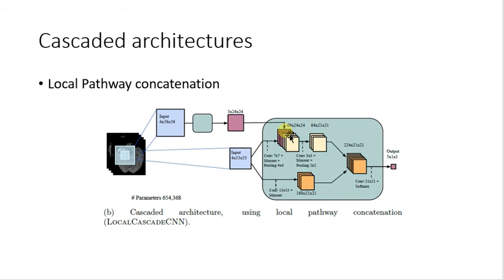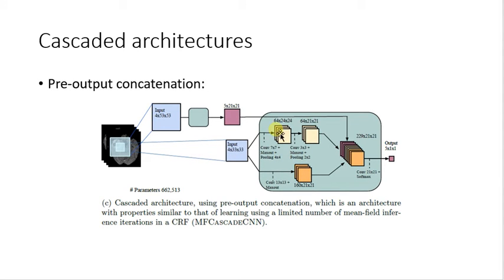And similarly, in the pre-output concatenation, we move to the very end of the second convolutional neural network and perform concatenation right before its output layer.